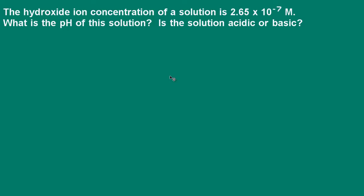Hi, this is Dr. O'Connor. Welcome to Pathways to Chemistry. Here we're told that the hydroxide ion concentration of a solution is 2.65 times 10 to the negative 7 molar. We're asked, what is the pH of the solution? Is the solution acidic or basic?